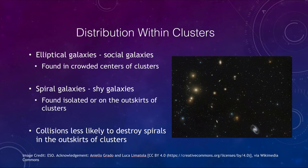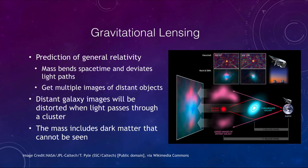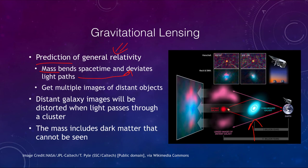One of the ways we can study clusters is through gravitational lensing, a prediction of general relativity. Mass bends space and time, meaning the light paths from distant objects deviate when passing near a massive object. A foreground galaxy acts as the lens — light from a distant background galaxy gets bent around it, causing us to see multiple images of that distant galaxy in different directions. We can get multiple images of distant objects whether they are galaxies or quasars.